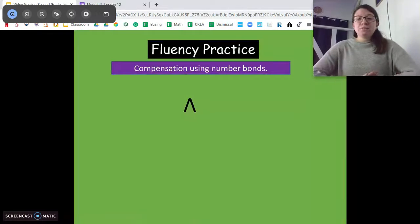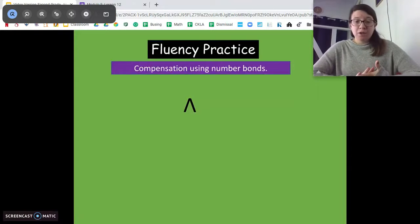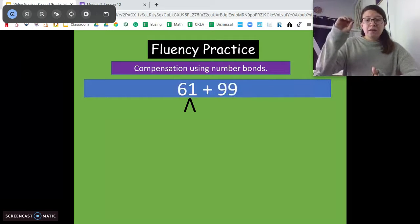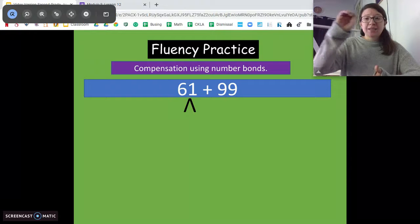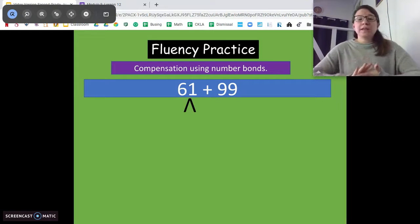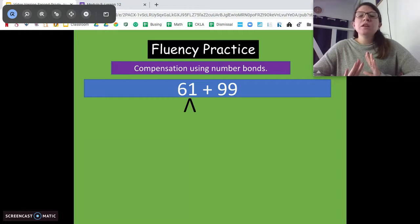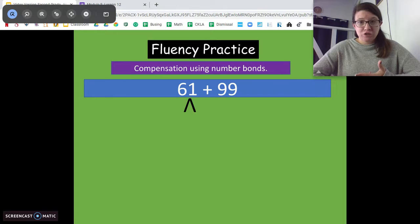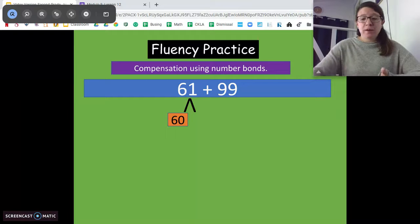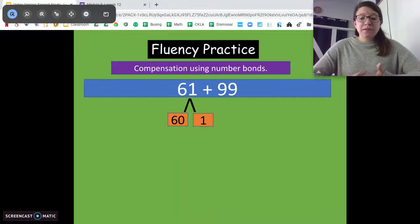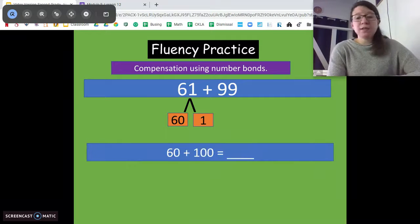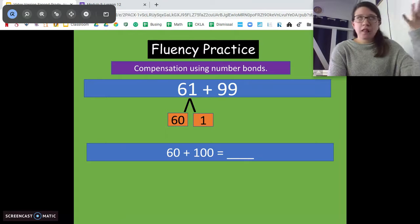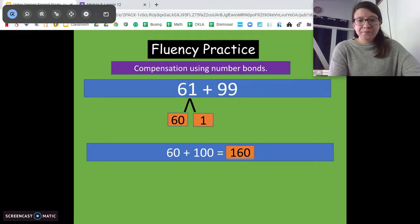Before we start though, let's practice using compensation using number bonds. So that's when we take one of the numbers and we try to get it to its next ten or next hundred. Okay so let's do this first one together and I'm gonna have you work on your own. So 99 is close to its next hundred. How many does it need to get to its next hundred? Just one, right? So we're gonna take that one out of the 61 and we get 60 and one. Now our next step is to write that new number sentence. So our new number sentence is 60 plus 100. A lot easier for our brains to figure out and we get 160.